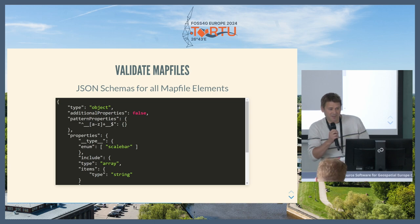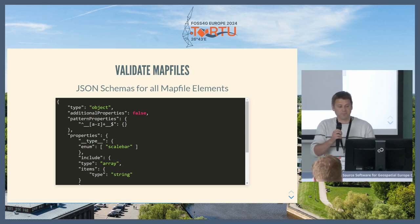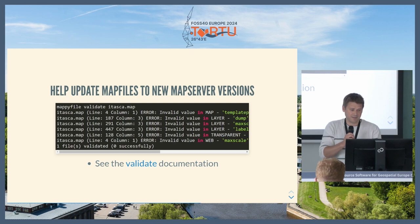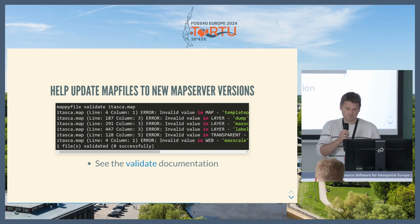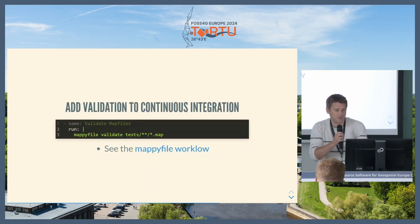You can also validate map files. There's a whole JSON schema that's been written as part of the Mapyfile project, covering every single property of the map file and all the valid settings you can have. So you can run your map file through the validator. This helps if you have an old map file and you want to update to a new version of Map Server — you can run it through the validator and it'll tell you all the things that have been deprecated with the new versions.